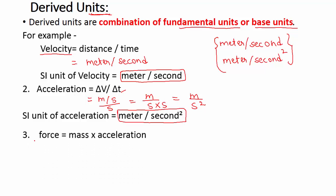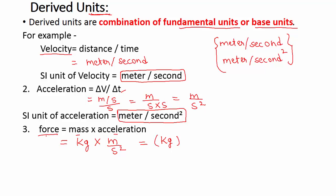Let's take another example of force. Formula of force equals mass times acceleration. Plug in SI unit of mass, that is kilogram, and SI unit of acceleration. We found it meter per second square. So this becomes kilogram meter per second square. So derived unit of force equals kilogram meter per second square.